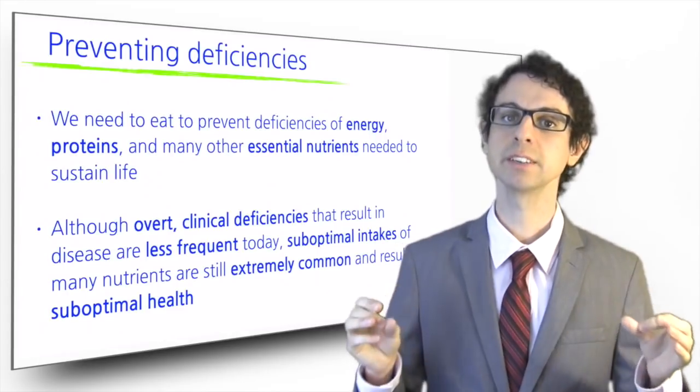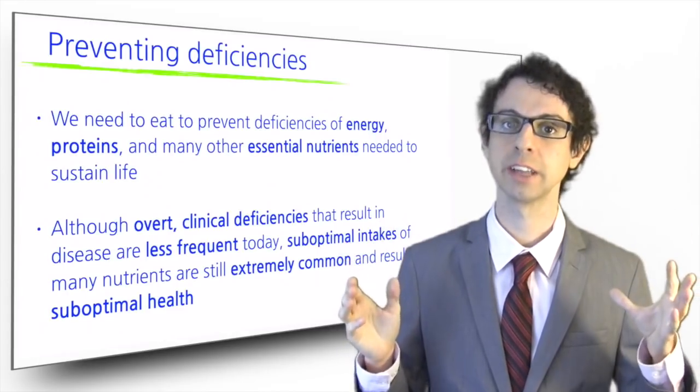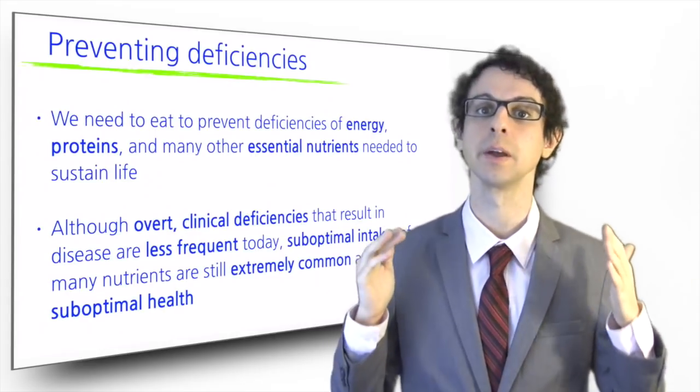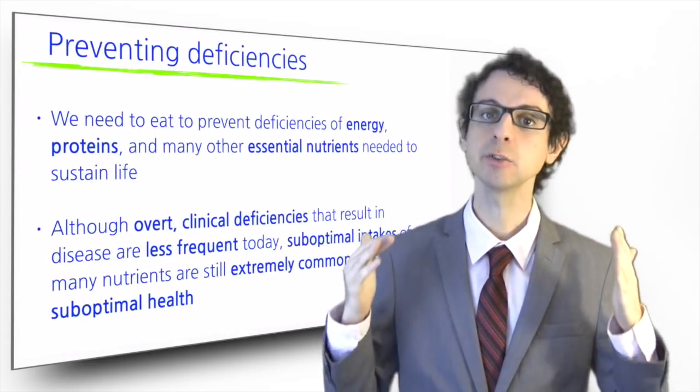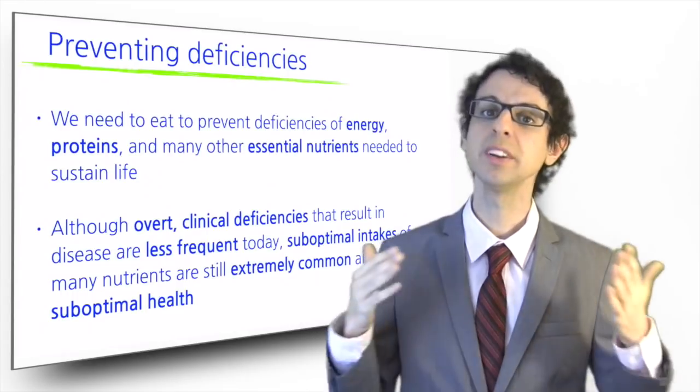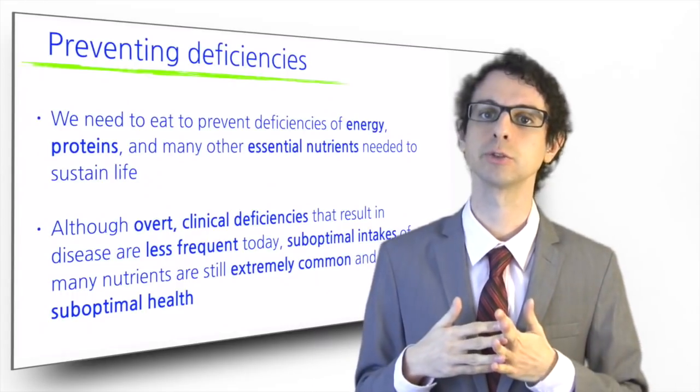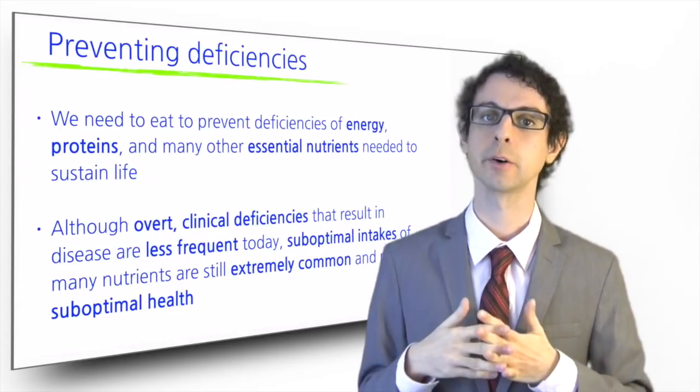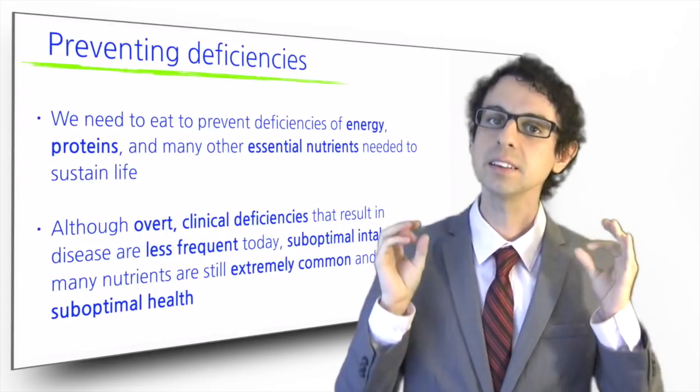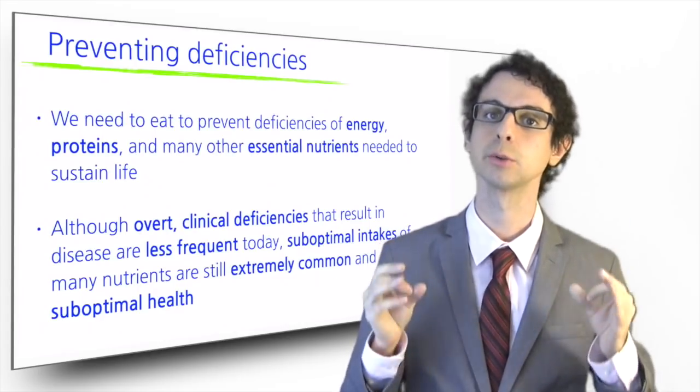The major risks related to an unbalanced diet today are much different than what they were in the past. In our rich post-industrialized countries, we don't die of protein energy malnutrition, scurvy, beriberi or pellagra anymore.